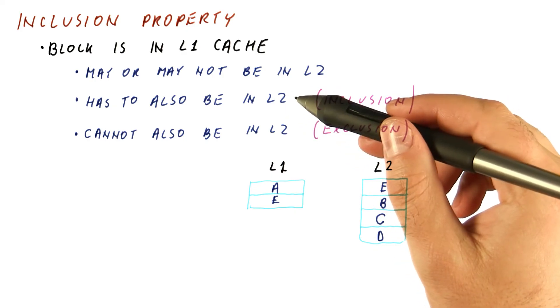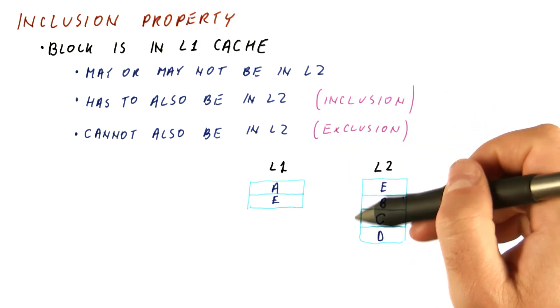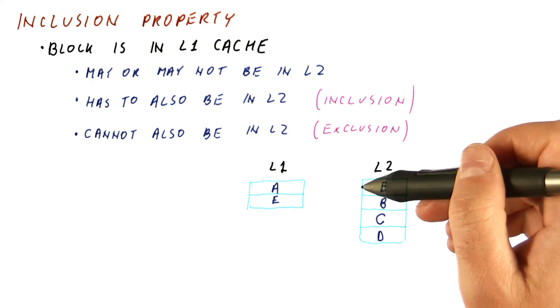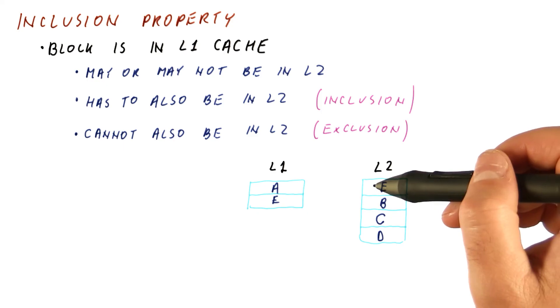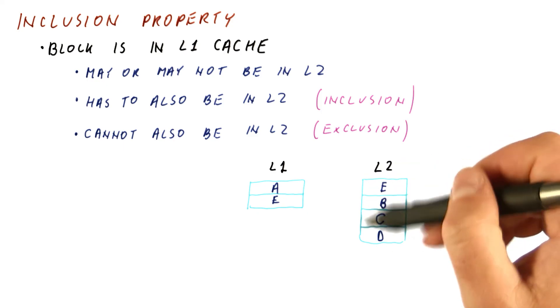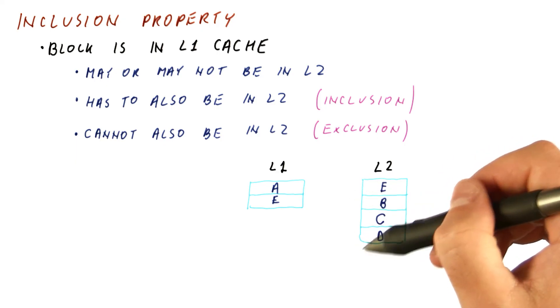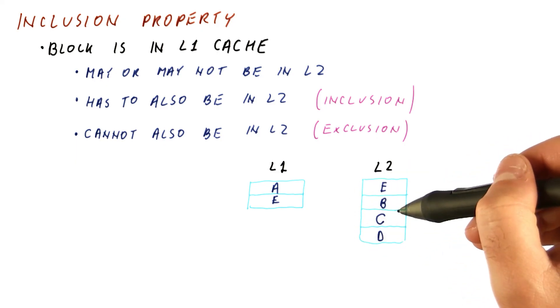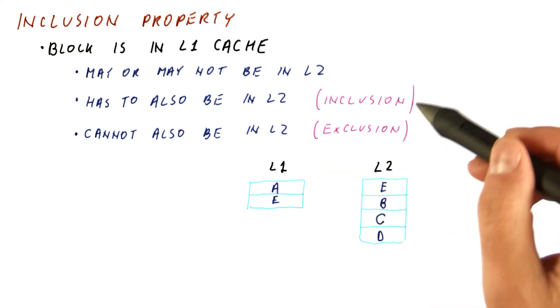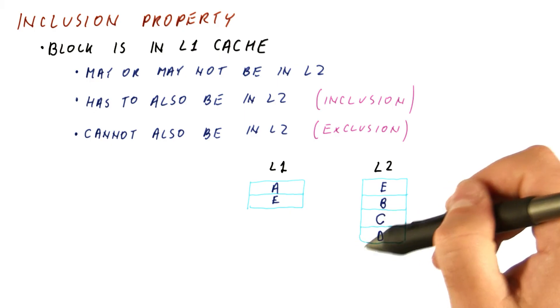To maintain inclusion properly, we have to have a so-called inclusion bit added to L2, which is one if that block is also in L1. And when we replace things from L2, we prevent blocks whose inclusion bit is one from being replaced. That ensures that we never replace something that is still in L1, so we can maintain inclusion. But again, that requires an additional bit.